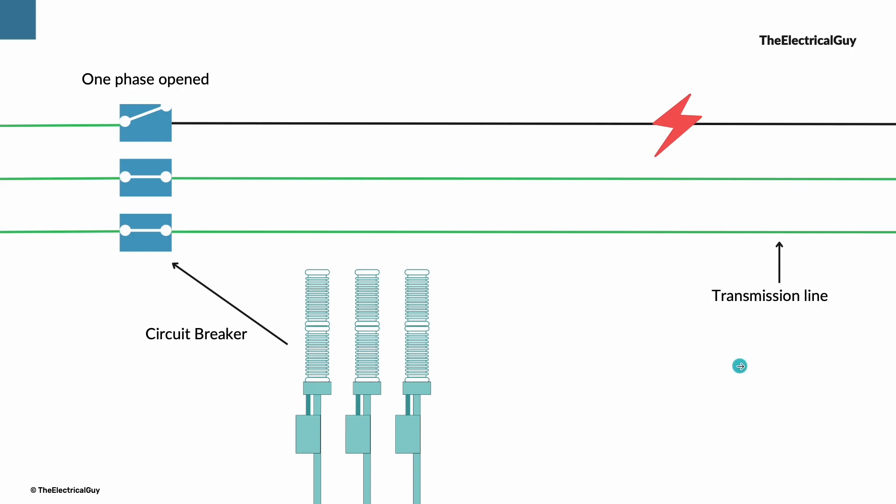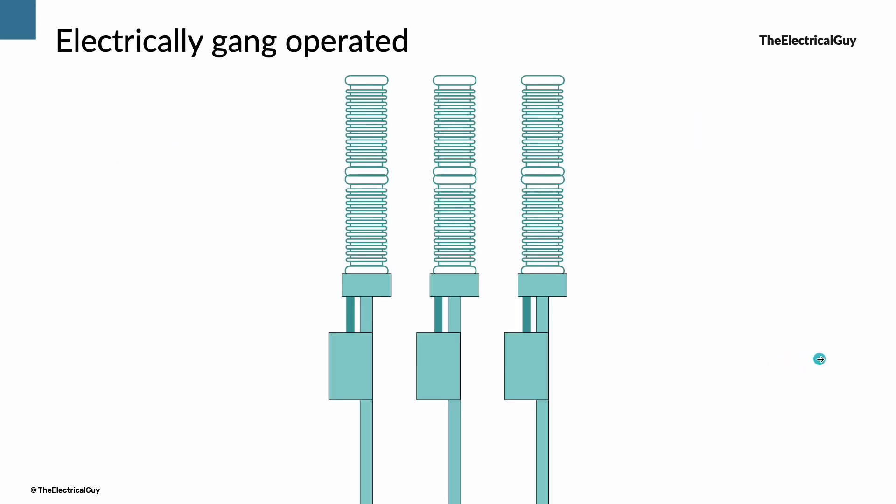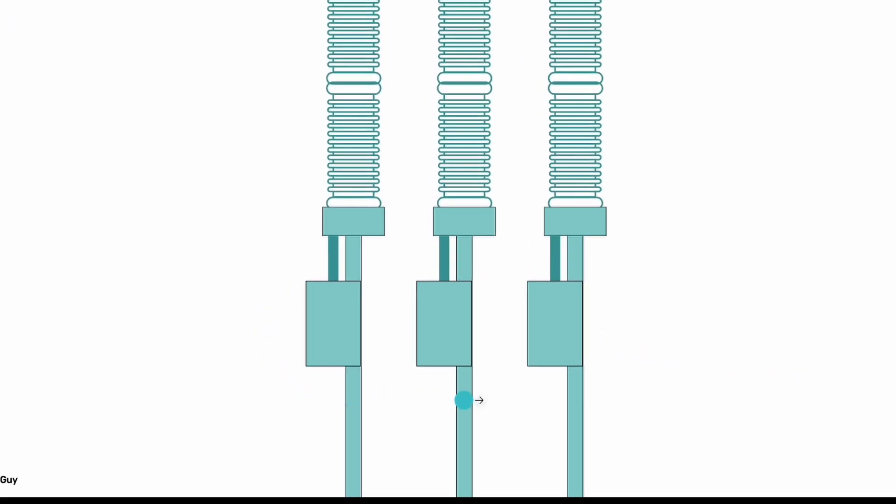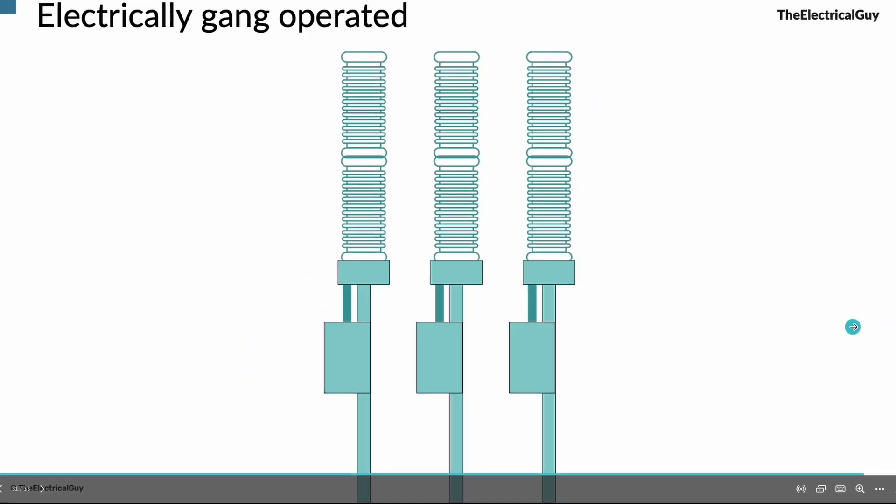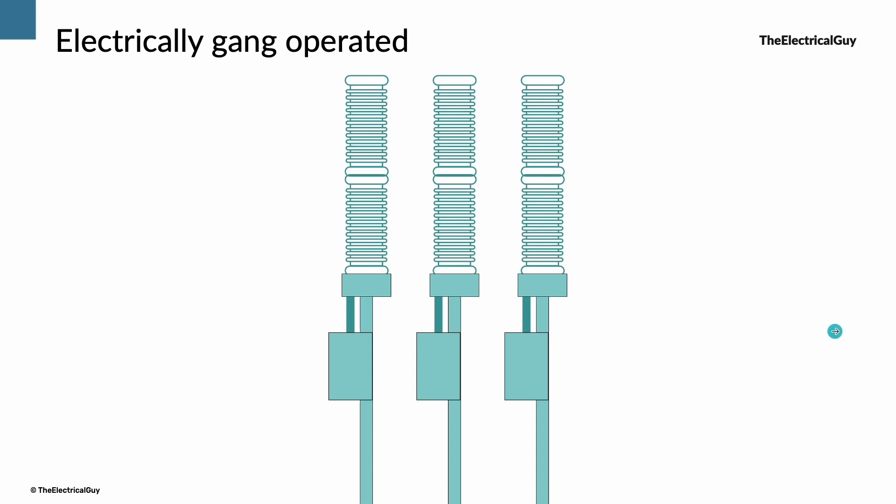But it is important to note that single phase auto reclosing can only be performed by an electrically gang operated circuit breaker. That means every phase of circuit breaker will have its own dedicated mechanism. In that case only, a circuit breaker will be able to trip or close one phase out of three.